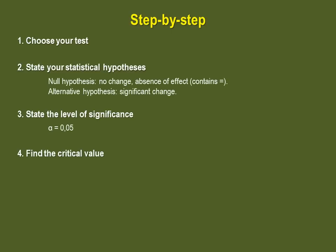Step 4 is to find the critical value. For now, the only possibilities we know of is Z and T, although we'll see more as we go along. Step 5 is to calculate the statistic.